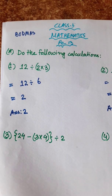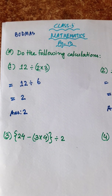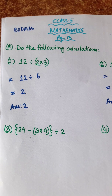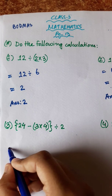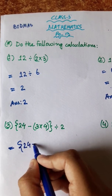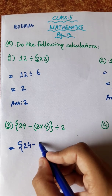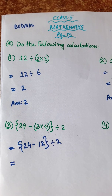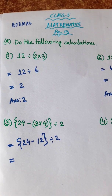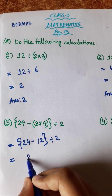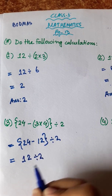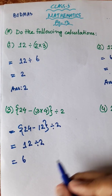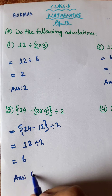Part number 3: 24 minus, first bracket 3 into 4, bracket closed, second bracket closed, divided by 2. If you have a bracket, do the first bracket first, then the second bracket. First bracket: 3 into 4 is 12. Then second bracket: 24 minus 12 is 12. Then 12 divided by 2 is 6. So answer is 6.